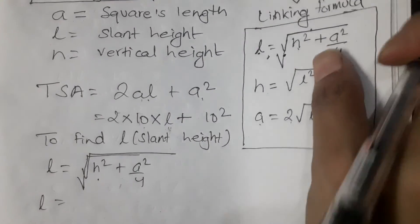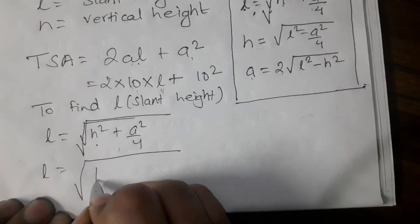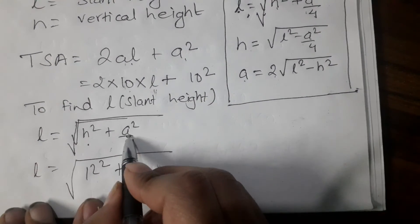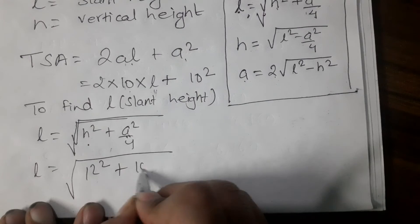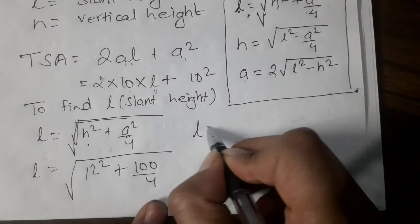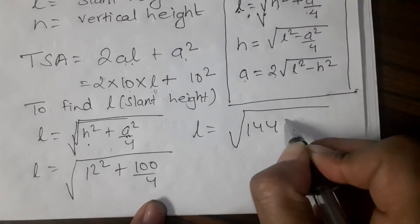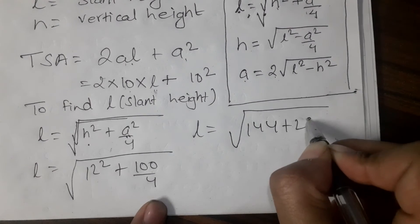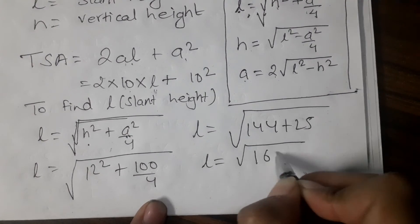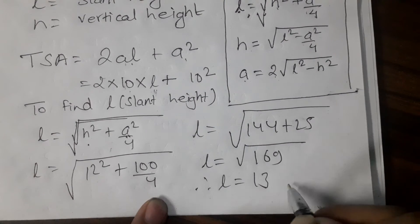In this way, L is going to be the square root of 144 plus 25, which equals the square root of 169. Therefore, L is going to be 13 cm.